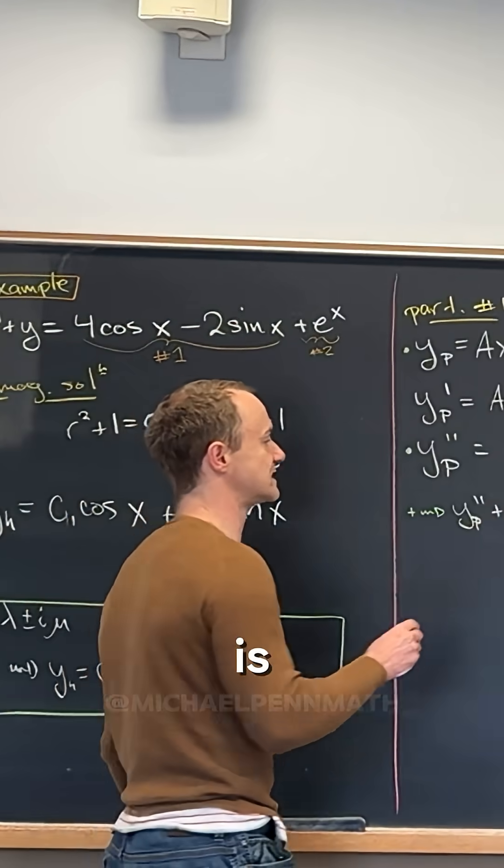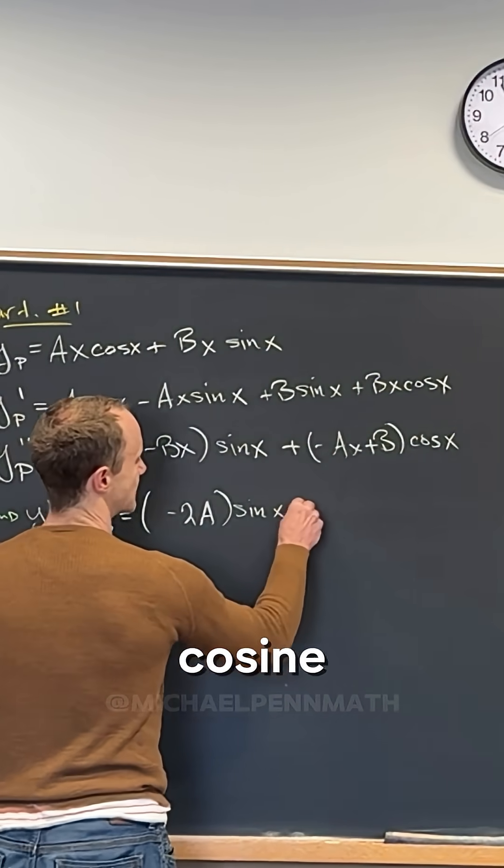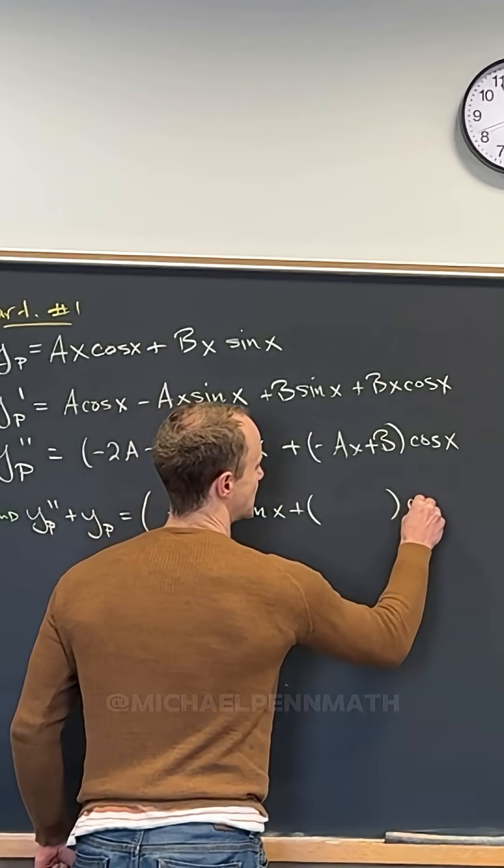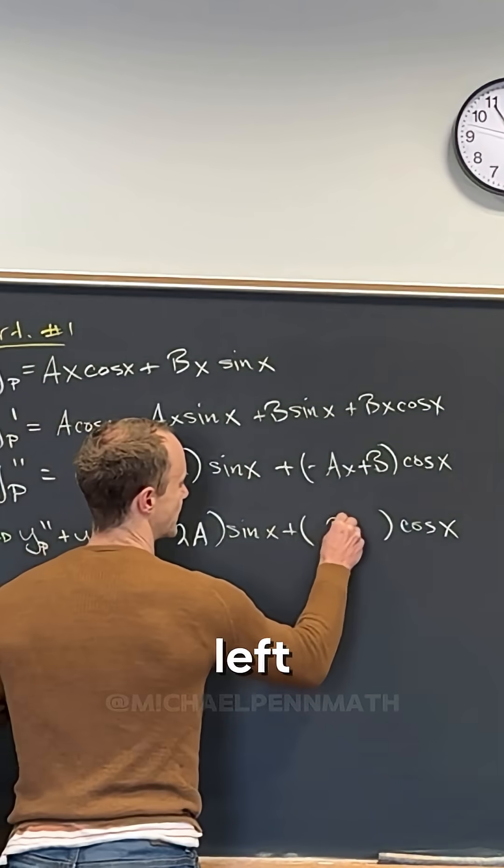Exactly, the bx's cancel, and we're left with minus 2a. And then let's do the same thing for the cosine part, plus something times the cosine part. What happens there? The ax's cancel, and we're just left with b.